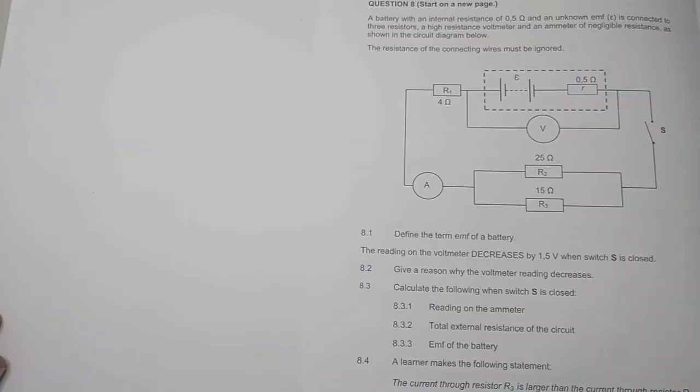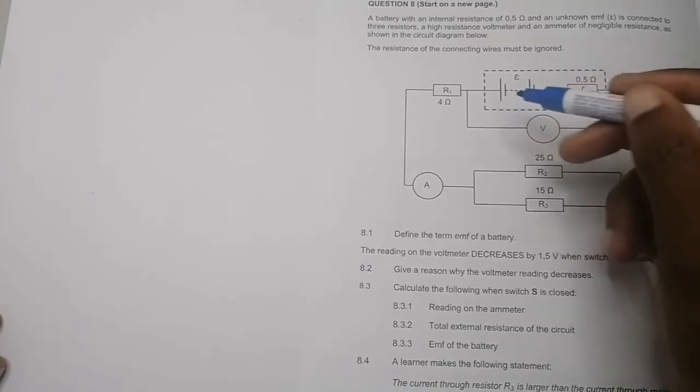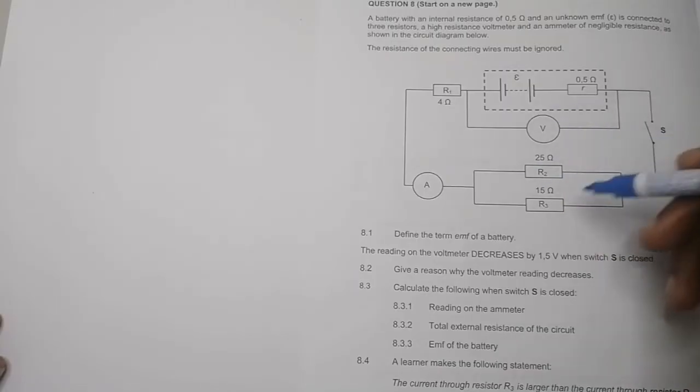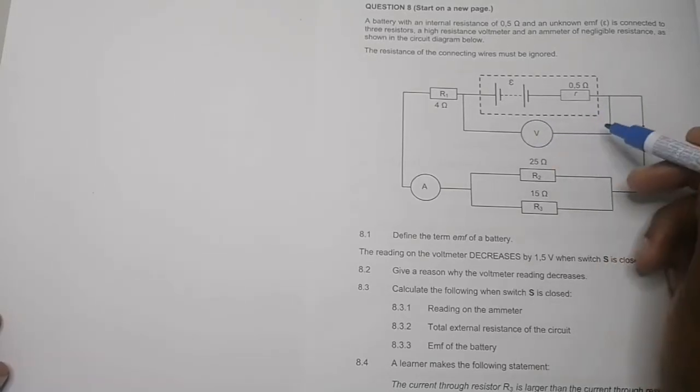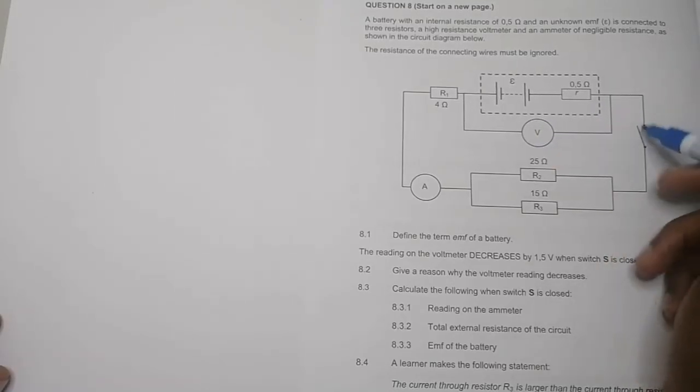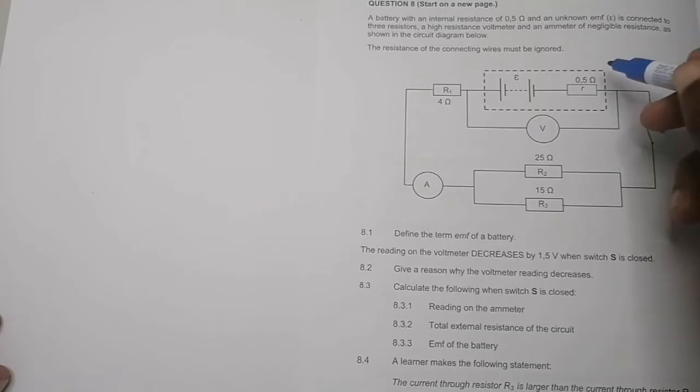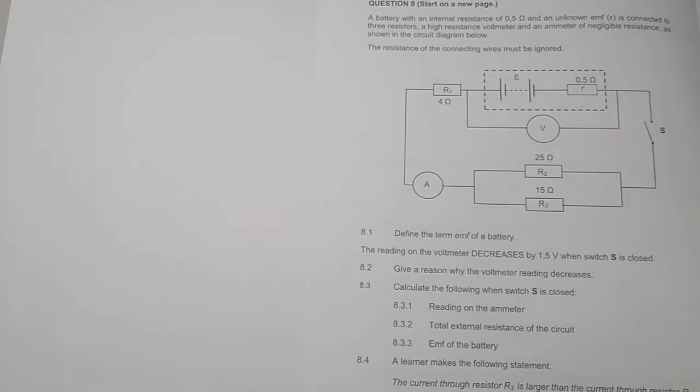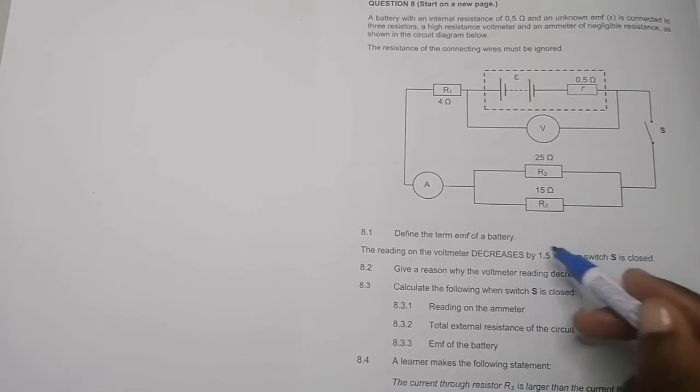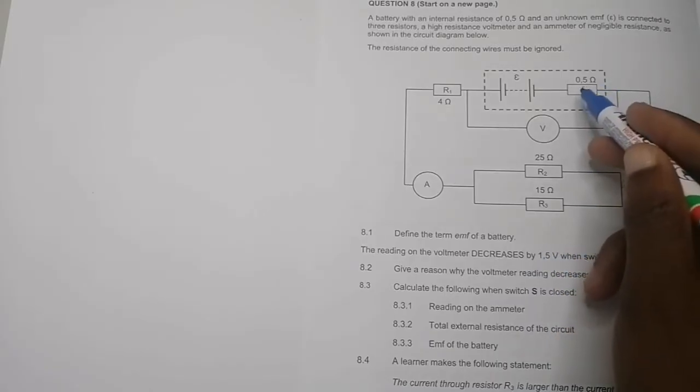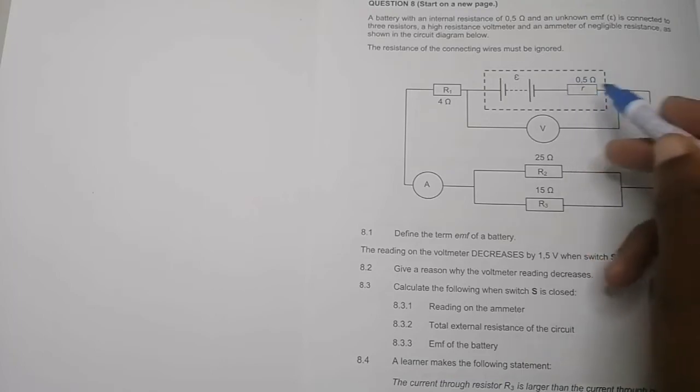What we would tend to measure when we measure a battery for an open circuit would be the value of the emf. But the moment we close switch S, current begins to flow and some of the energy will be lost due to the internal resistance. That's why the value decreases by 1.5 volts, meaning our V internal, the voltage across the internal resistance, should be 1.5 volts.